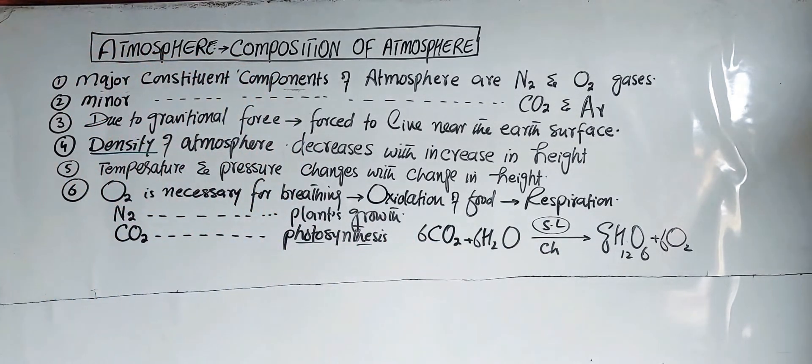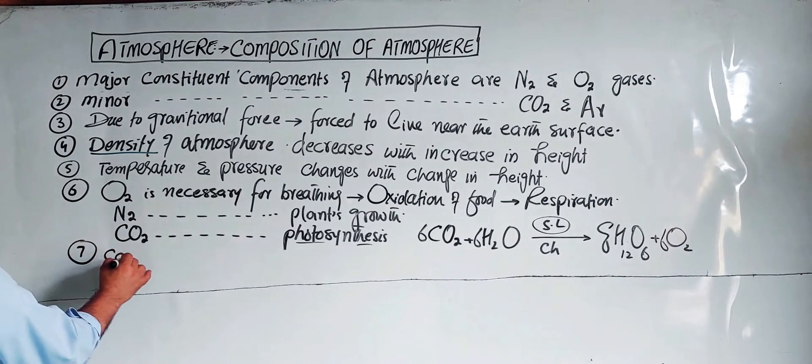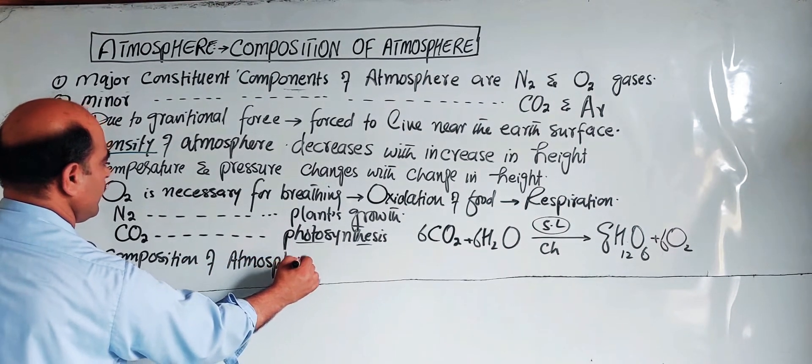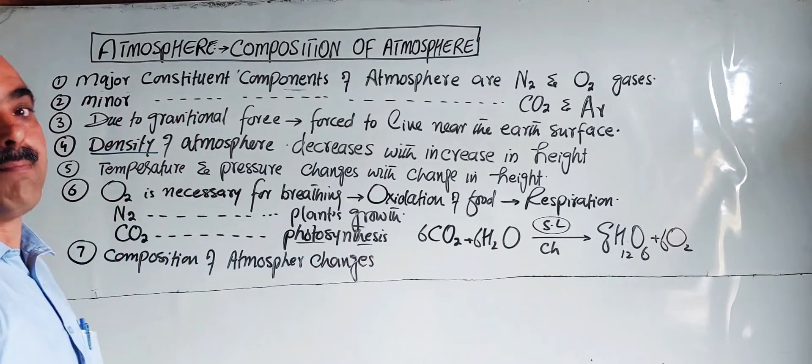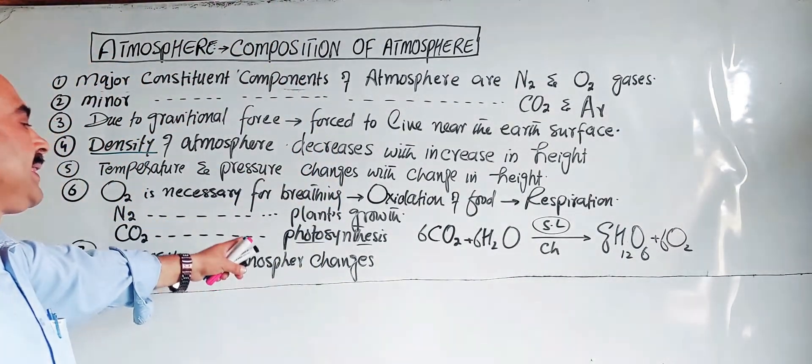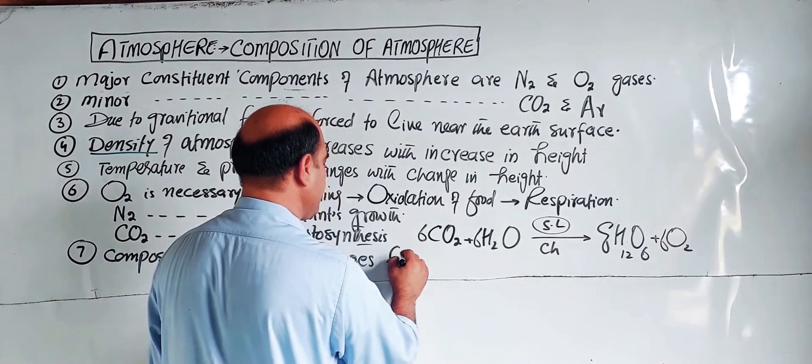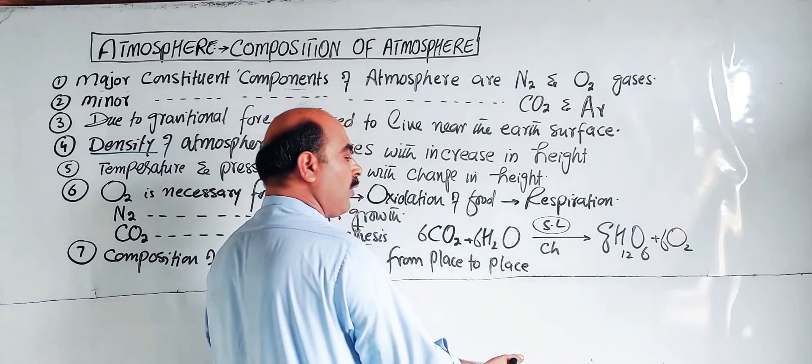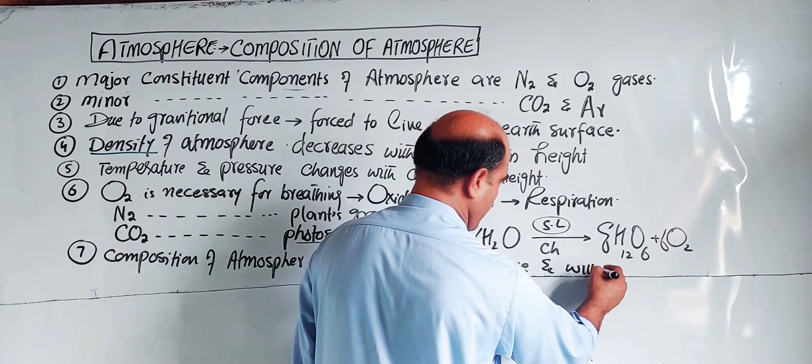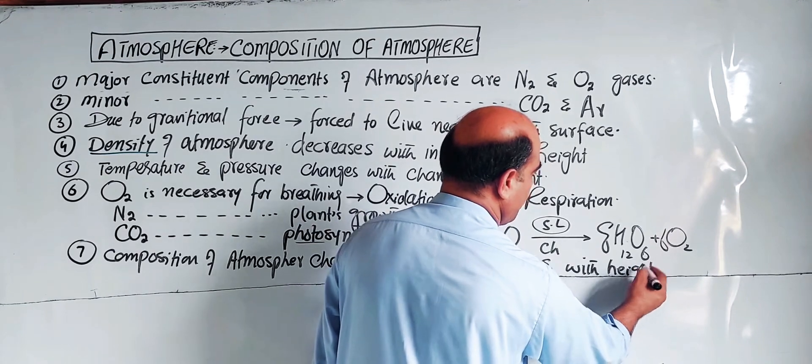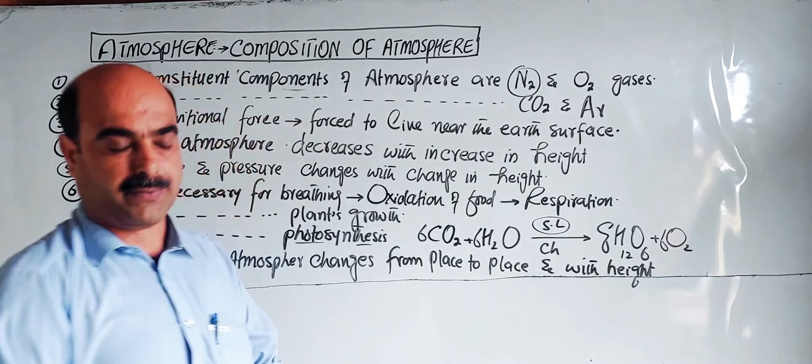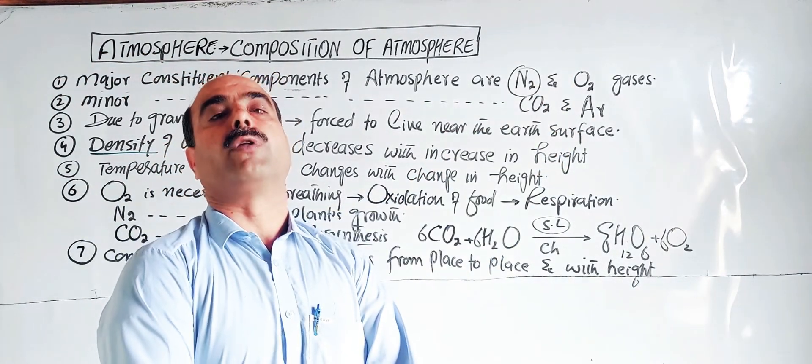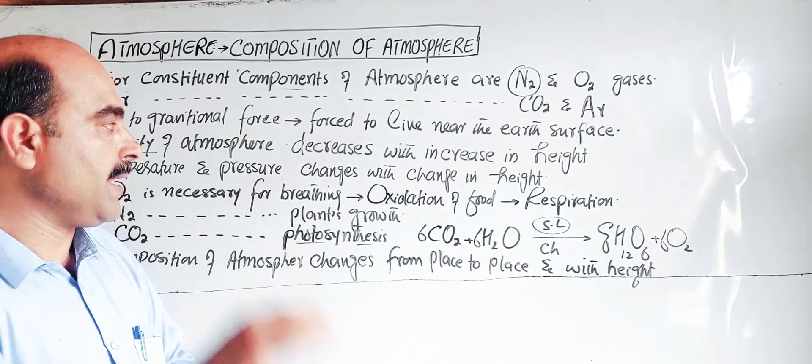The composition of atmosphere changes from place to place and with height. For example, nitrogen is 78 or 79 percent at normal level, but oxygen level changes with altitude.